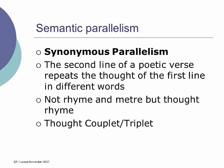He identified three different kinds of semantic parallelism. The first he called synonymous parallelism. This is where the second line of the poetic verse repeats the thought of the first line, only in different words. The rhyme is not in sound, but in thought. And often there's meter too in Hebrew poetry, which may be lost to us. But this is not lost, because it is translatable. And so there's a thought couplet, or sometimes a thought triplet.